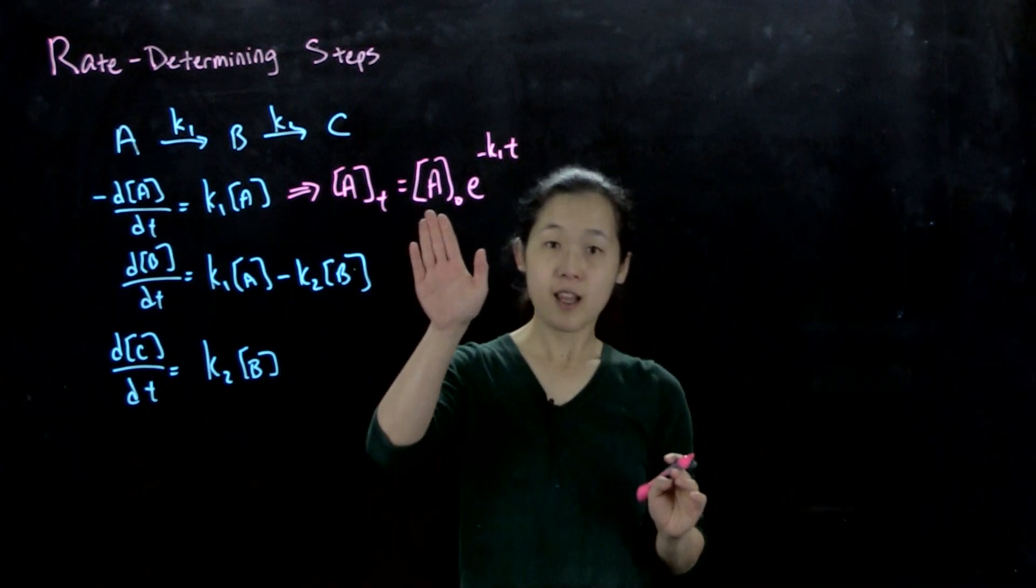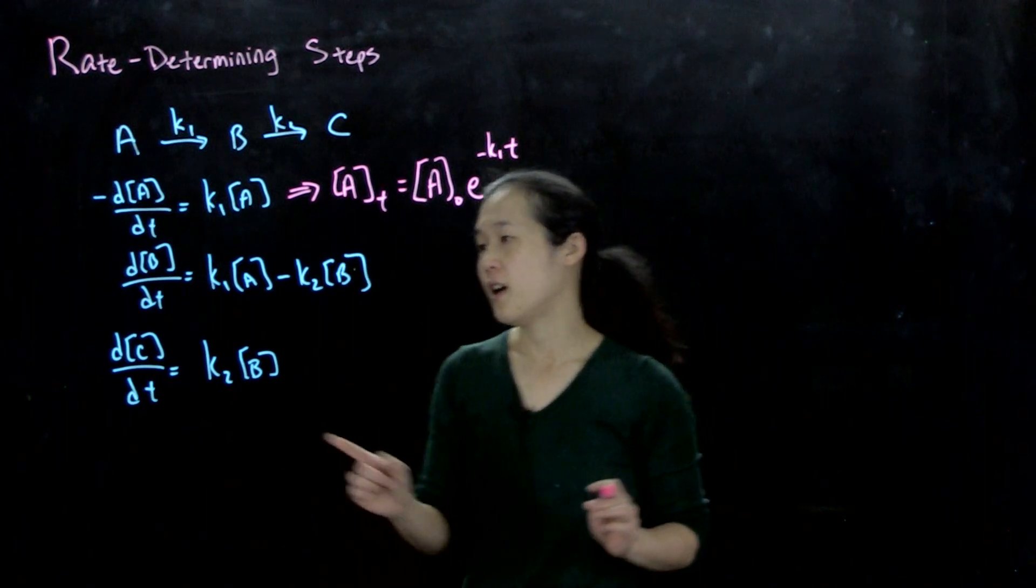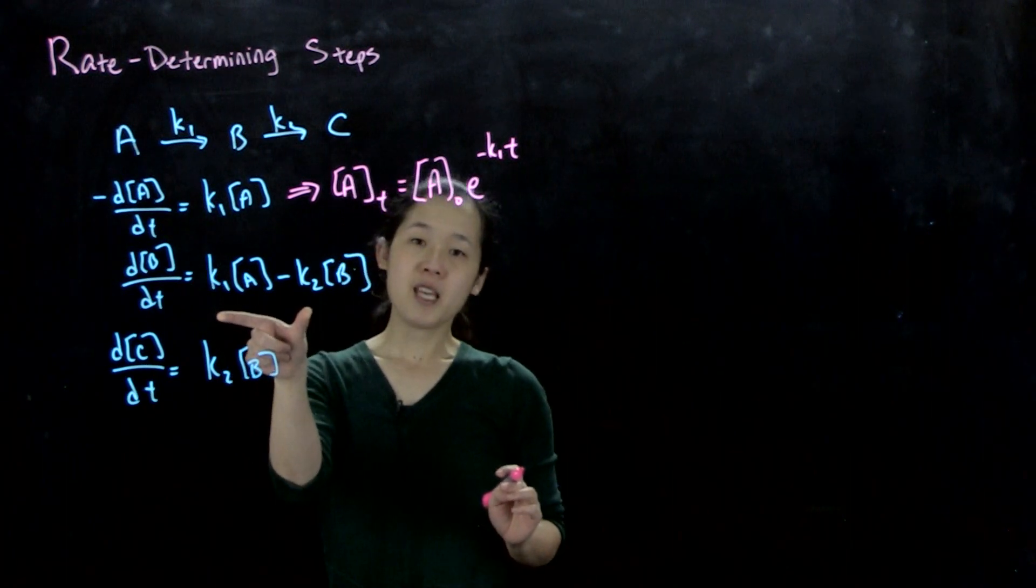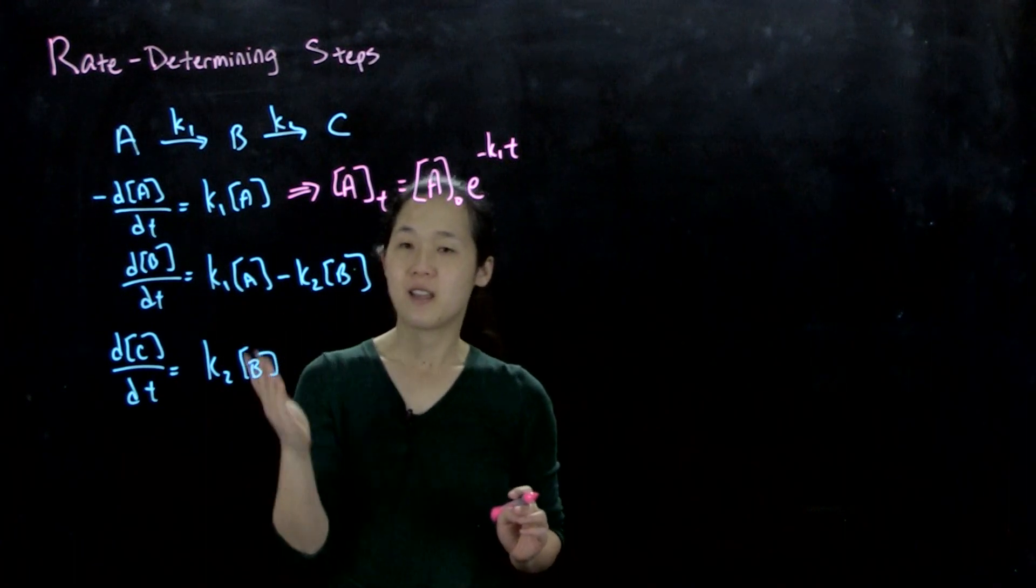So that's simple enough. We know our initial concentration of A, that's what we put into the reaction, so we know how A over time should go. So for B, it's a little bit more complicated because now we have two first-order rate expressions that will contribute to B.